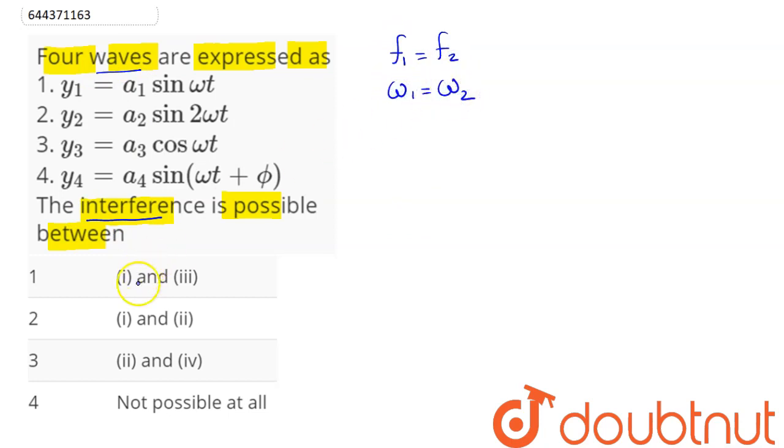So amongst the four options first says 1 and 3. Here we can say the angular frequency of first is omega and that of the third is also omega. They have some phase difference. We can say phase difference between first and third is 90° as cos ωt can be written as sin(ωt + π/2).